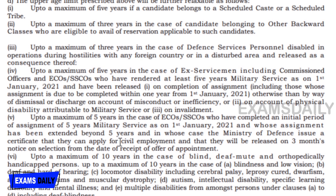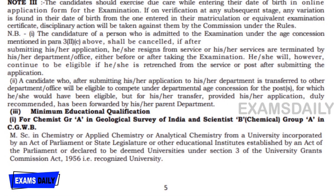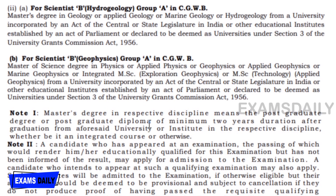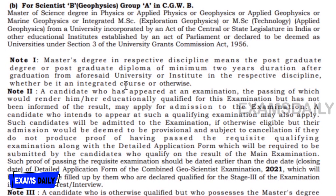Educational qualifications: For Chemist Group A in the Geological Survey of India and Scientist B Chemical Group A in CGWB, you must hold an MSc in Chemistry, Applied Chemistry, or Analytical Chemistry from a recognized university. For Scientist B Hydrogeology Group A in CGWB, a Master's degree in Geology, Applied Geology, Marine Geology, or Hydrogeology is required. For Scientist B Geophysics Group A in CGWB, an MSc in Physics, Applied Physics, Applied Geophysics, Marine Geophysics, Integrated MSc in Exploration Geophysics, or MSc Technology is required.